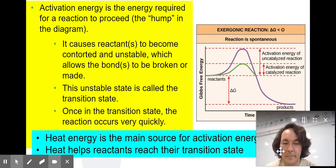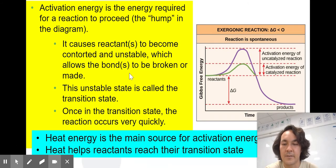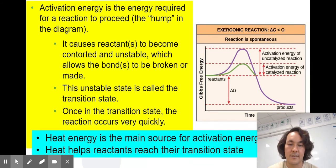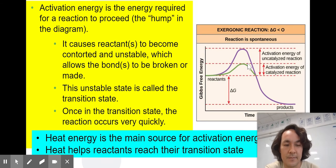Activation energy is the energy required for a reaction to proceed. It causes reactants to become contorted and unstable, allowing bonds to be broken. When you add an enzyme, the activation energy is reduced and the reaction happens much more quickly. A good example is hydrogen peroxide — you buy it in a brown bottle because sunlight will slowly help break H₂O₂ into water and oxygen. If you add an enzyme or something to lower the activation energy, it can happen much more quickly.